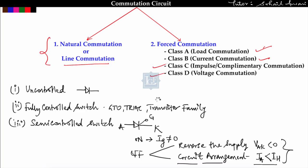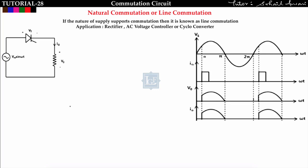In this lecture, lecture number 28, we will see natural commutation, which is also known as line commutation. The definition of natural commutation is: if the nature of supply supports commutation, then it is known as natural commutation or line commutation. We have seen this in rectifiers. Let us take a single-phase half-wave controlled rectifier in which a thyristor is connected in series with a load, and supply V_m sin(ωt) — that is AC — is given.